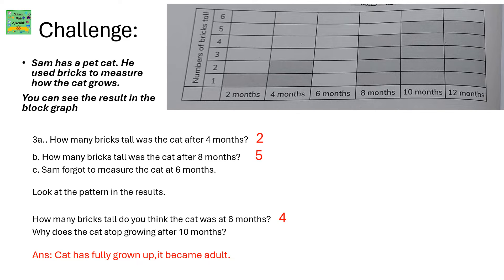Challenge. Sam has a pet cat. He used bricks to measure how the cat grows. You can see the result in the block graph. How many bricks tall was the cat after 4 months? 2 bricks. How many bricks tall was the cat after 8 months? 5 bricks. Sam forgot to measure the cat at 6 months. Look at the pattern in the results. How many bricks tall do you think the cat was at 6 months? 4.